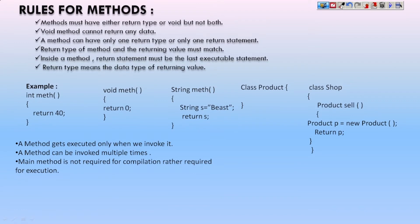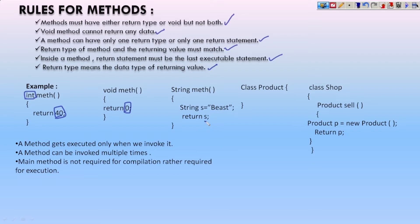Now let us see some rules for methods, just like the rules for identifiers. First: a method must have either a return type or void, but not both. A void method cannot return any data type. A method can have only one return type or only one return statement. The return type of the method and the returning value must match. Inside a method, the return statement must be the last executable statement. For example: an int method returns an integer value so the return type is int.